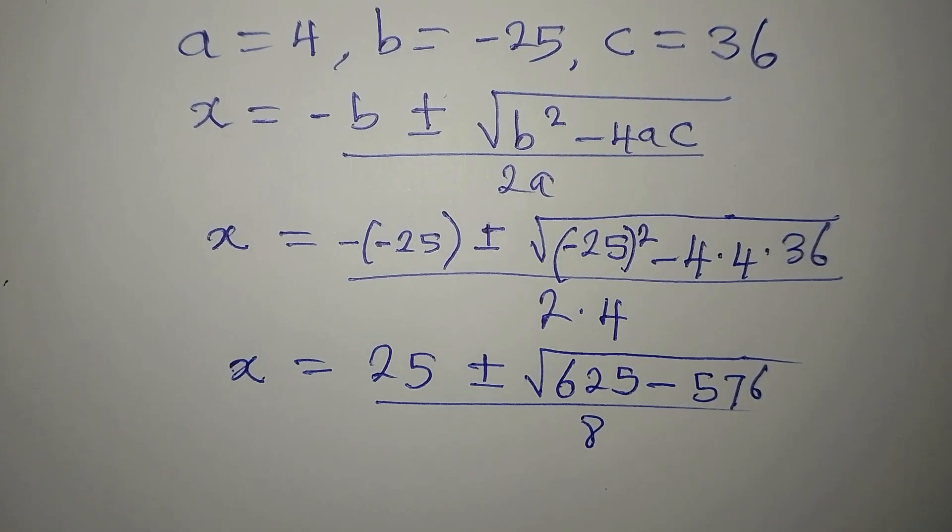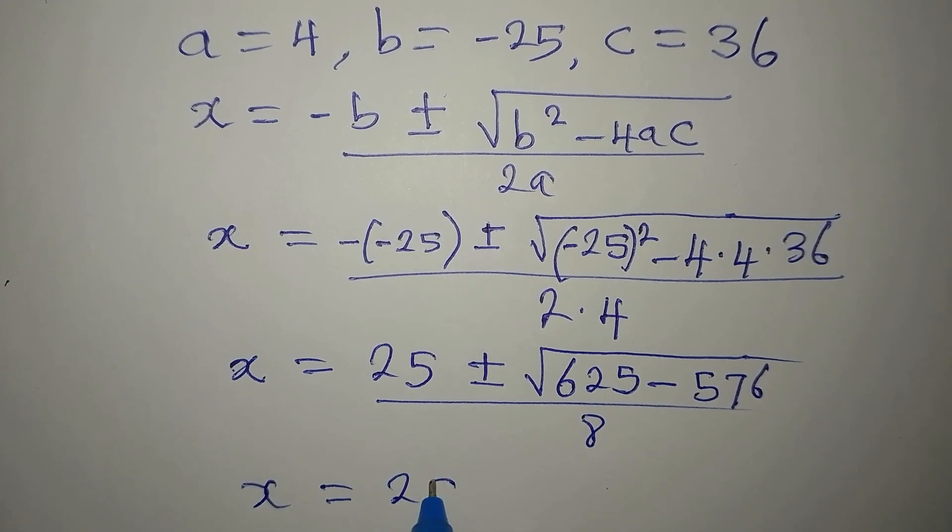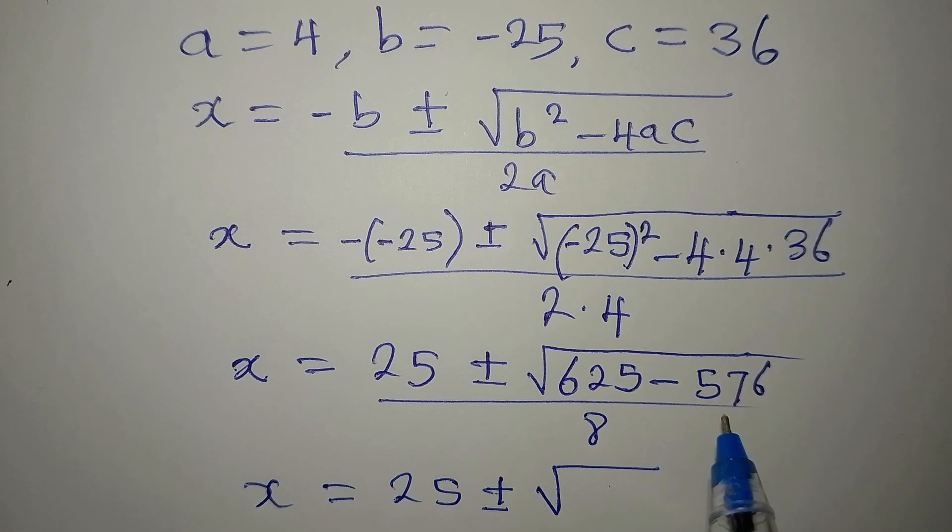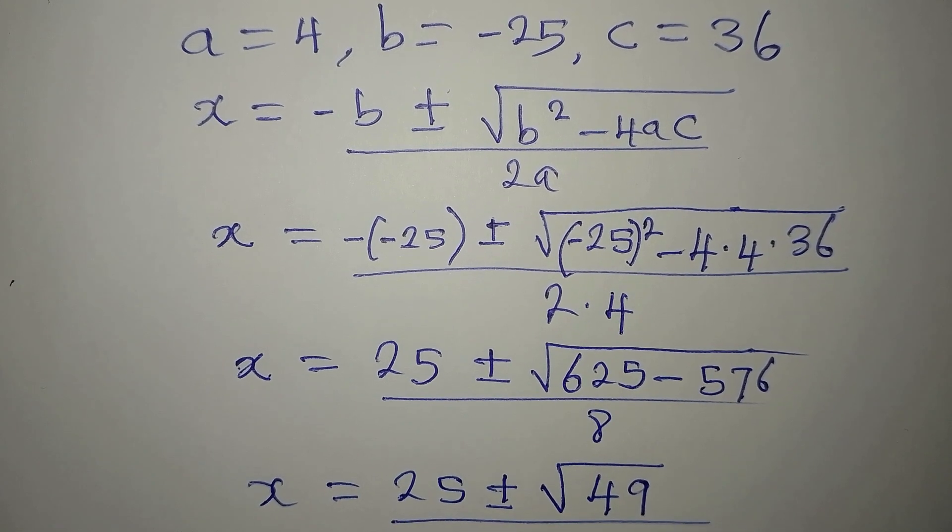Now, what do I do? Subtract. So that x will be equal to 25 plus or minus, 625 minus 576 is 49. So we will now divide this by 8.